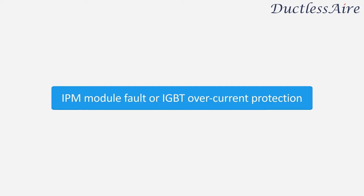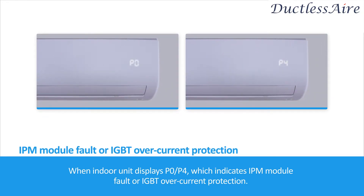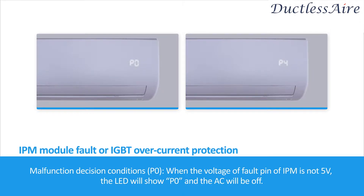IPM Module Fault or IGBT overcurrent protection. When the indoor unit displays P0 or P4, which indicates IPM Module Fault or IGBT overcurrent protection, the malfunction decision condition for P0 is: when the voltage or fault pin of IPM is not 5 volts, the LED will show P0 and the air conditioner will be off.